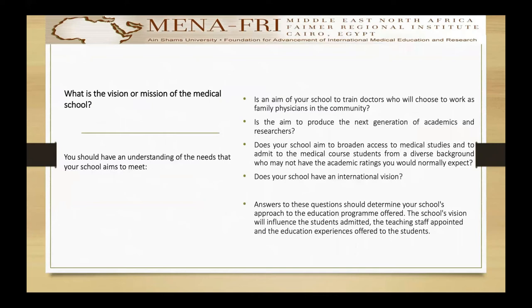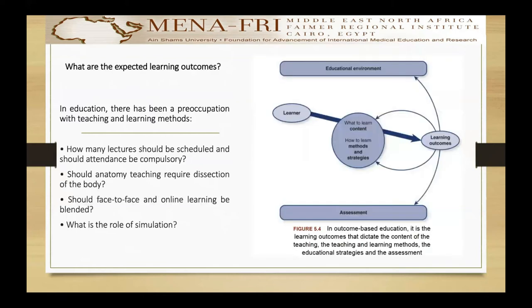You should also have an understanding of the needs that the school is aimed to fulfill, regarding the vision and mission of the medical schools, as well as what the expected learning outcomes should be in education. There has been a preoccupation with teaching and learning methods, and this diagram shows the relationship between learning, learning outcome, assessment, and educational environment.